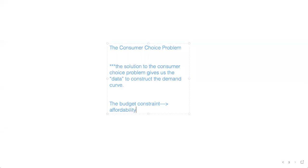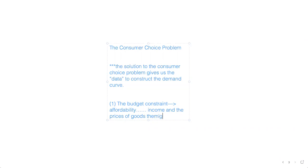There are really two pieces to the consumer choice problem. The first one is what we call a budget constraint, and this gets to the issue of affordability. One of the things that affects how much a consumer wants to buy of a particular good is their income and the prices of goods they might consume.